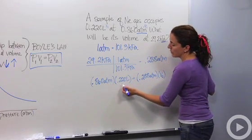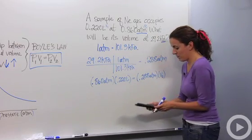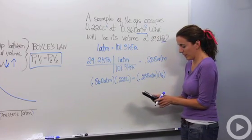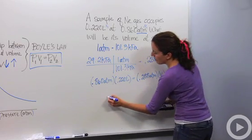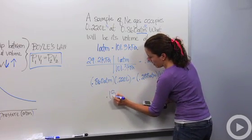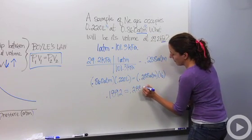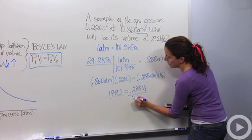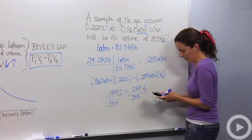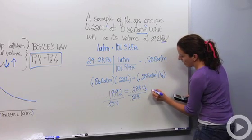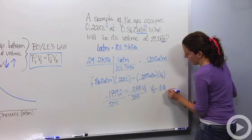0.86 times 0.22, I don't know that off the top of my head. 0.86 times 0.22 gives me 0.1892 equals 0.288 V2. We're going to divide by 0.288.